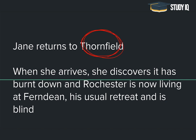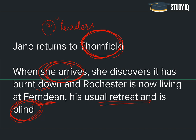Jane واپس Thornfield جاتی ہے، کیونکہ اسے لگتا ہے کہ Rochester نے انہیں خواب میں بلایا ہے۔ جب وہ Thornfield پہنچتی ہے تو discover کرتی ہے کہ پورا کا پورا گھر جل گیا ہے۔ اور Rochester اب Fern Dean میں رہ رہے ہیں — his usual retreat — اور Rochester اب blind ہو گئے ہیں۔ اس particular time پر Jane خود بولتی ہے: 'Reader, I married him۔' یہ پہلی ایسی important work ہے جہاں main character readers کے ساتھ directly interact کر رہا ہے — Jane اپنی خود کی novel میں readers سے بات کرتی ہے۔